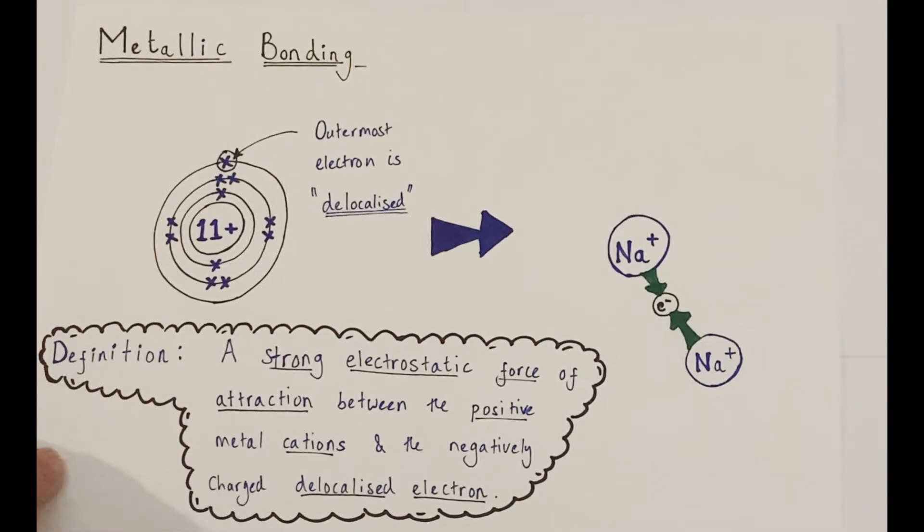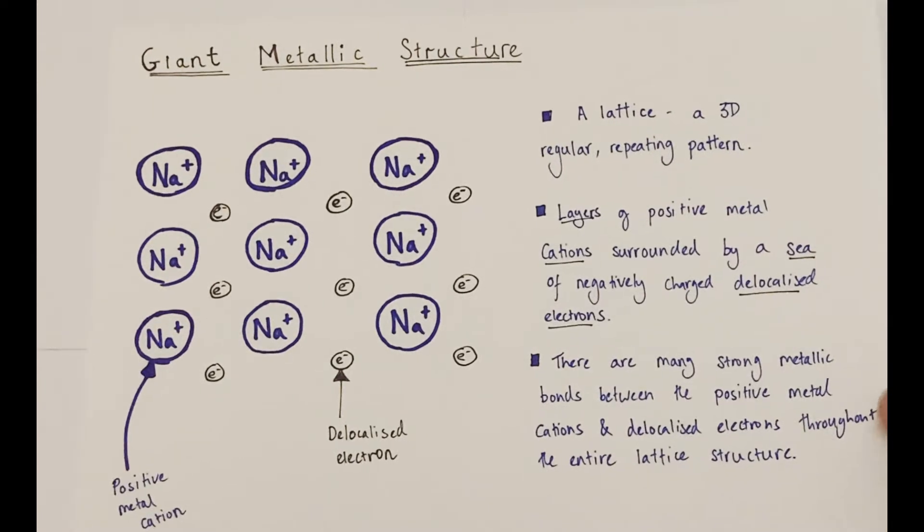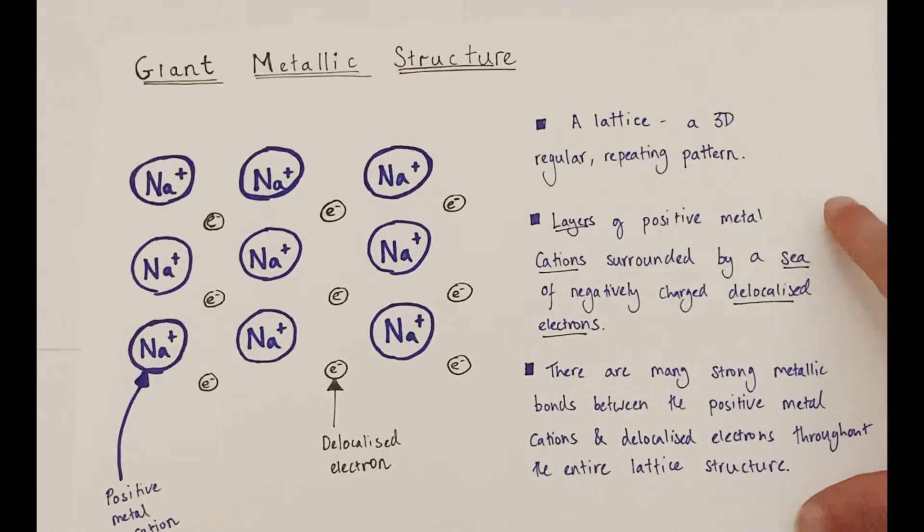So we should really expand on to what a metallic structure is like. Metallic structures are another class of giant structure. What's a giant structure, you may ask? A giant structure is, in chemistry, a regular repeating 3D pattern known as a lattice. It's a very regular structure.